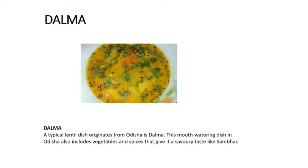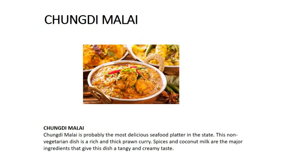Another dish is Dalma — it is another popular dish in Odisha, served like sambar with vegetables and spices. This is Chingudi Malai — it is a non-vegetarian dish, a prawn curry made with spices and coconut.